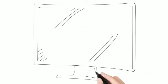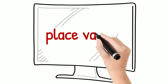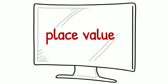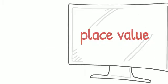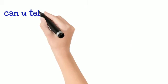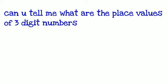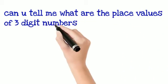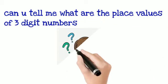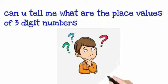So place values — let's get started. Till now we are familiar with two digit numbers. In two digit numbers, the place values we will learn are 1s and 10s. Can you tell me what are the place values of 3 digit numbers?